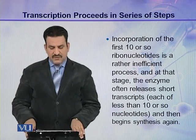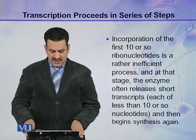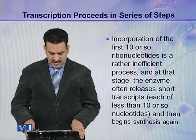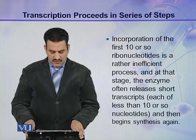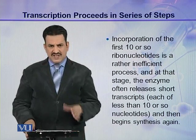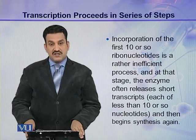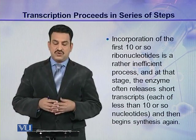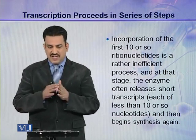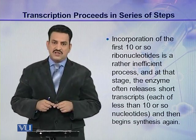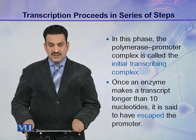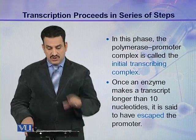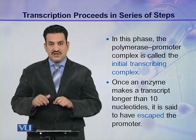Incorporation of the first 10 or so ribonucleotides is a rather inefficient process, called initial transcription. At that stage the enzyme often releases short transcripts of less than 10 nucleotides and then begins synthesis again. This phase is called initial transcribing complex.